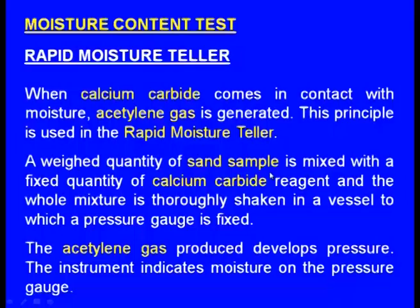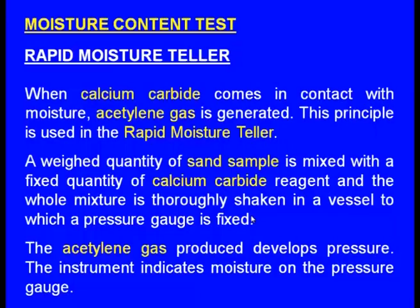A weighed quantity of sand sample is mixed with a fixed quantity of calcium carbide reagent and the whole mixture is thoroughly shaken in a vessel in which a pressure gauge is fixed. The calcium carbide reacts with the moisture of the green sand and accordingly acetylene gas is produced. The amount of acetylene gas produced depends upon the moisture content of the molding sand. The acetylene gas produces pressure, and the instrument indicates moisture on the pressure gauge, which is calibrated. Accordingly, we can know the percentage moisture in the molding sand within very less time — that is why it is known as the rapid moisture teller.